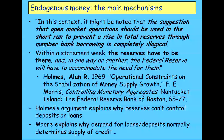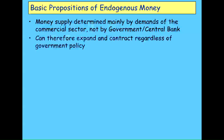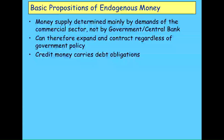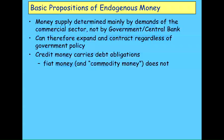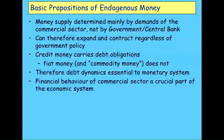Moore goes on to explain that the supply of loans is largely determined by the demand for credit. The basic argument of endogenous money is that the commercial sector itself — including banks — determines the level of money in the system, and it can therefore expand or contract regardless of government policy. Once you're looking at credit money, you've also got to look at the dynamics of debt. That means what the financial sector does as part of the overall commercial system is a crucial part of the economy.